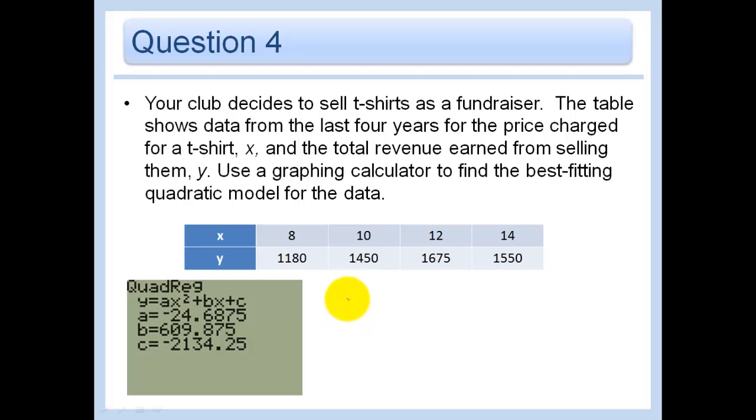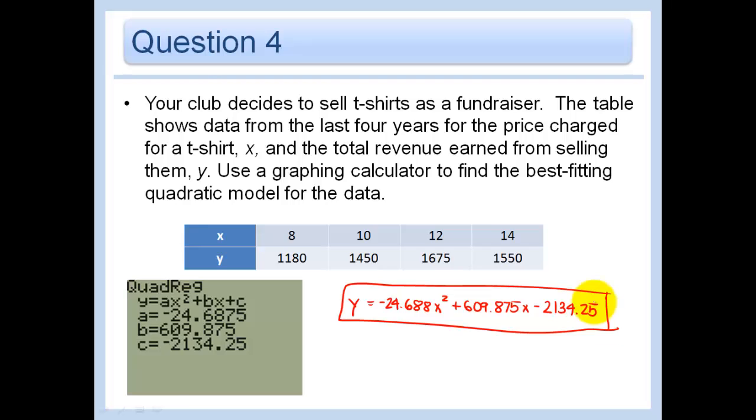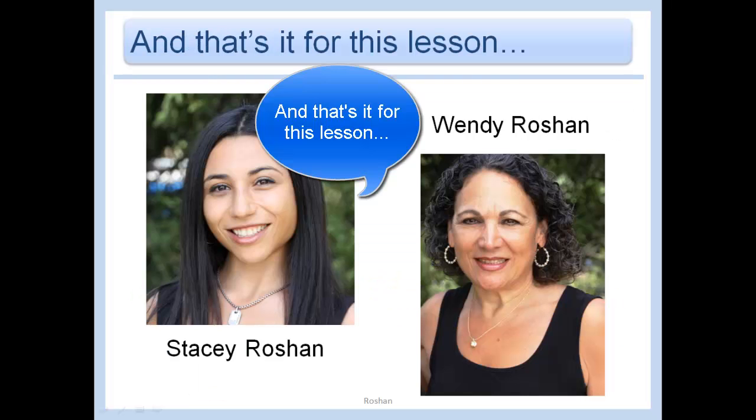So back over here, this was what my calculator spit out. So my answer is y equals a, which is negative 24.688x squared, plus b, which is 609.875x, plus c, which is negative 2134.25. And that is my answer. And that's it for this lesson. Bye.